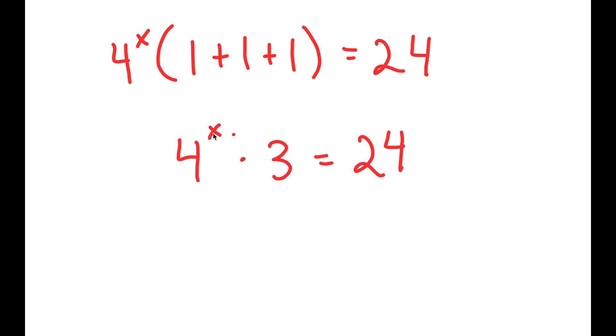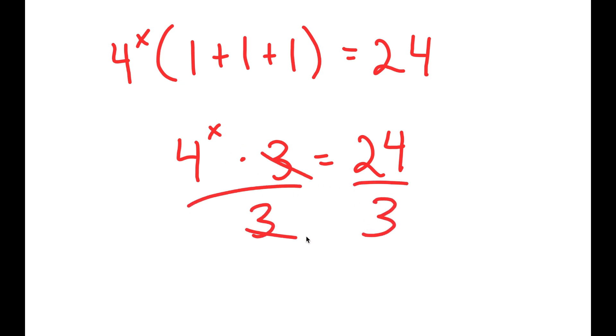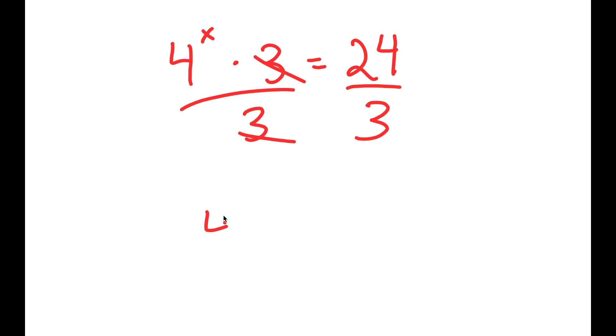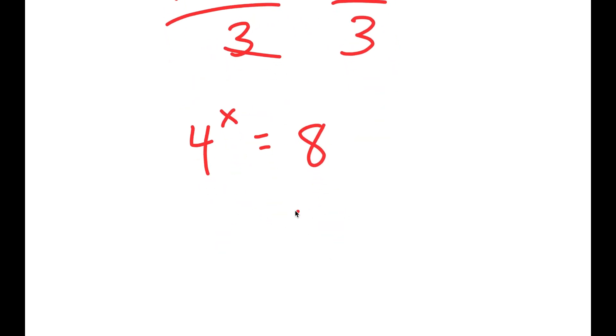Now we want to isolate x, so I'm going to divide both sides by 3. These two cancel out, and I get 4 to the power of x is equal to 8.